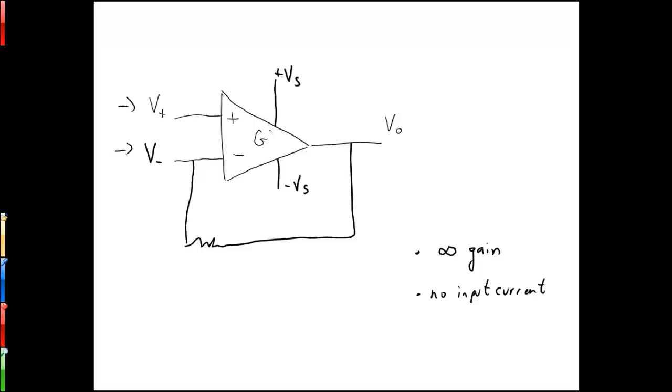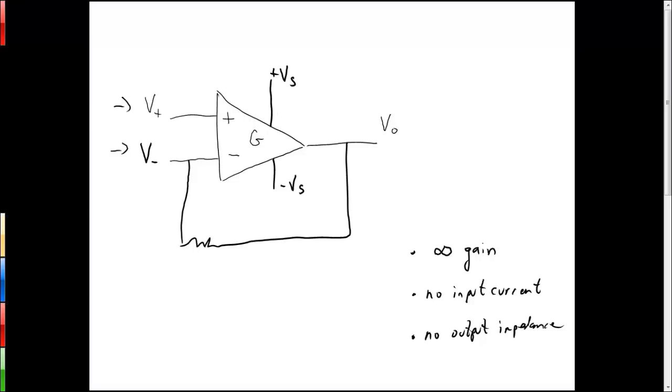And it greatly simplifies the calculations that we're going to do in a minute here if we assume that. We also assume no output impedance, meaning that whatever's coming out of the operational amplifier VO is not affected by downstream resistances and such. So when we do this, we end up with what's known as the two golden rules of ideal operational amplifiers.